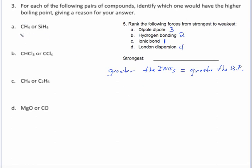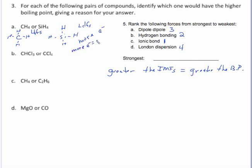The first thing you want to do is draw these things and figure out what type of forces they have. So CH4, if you were to draw that, it's tetrahedral, and SiH4 is also tetrahedral. They're both nonpolar, so the only forces they have are London dispersion forces. But SiH4 has greater London dispersion forces because it has more electrons, which equals greater London dispersion forces. So because SiH4 has more electrons and greater London dispersion forces, it's going to have the higher boiling point. SiH4 is the correct answer for A.